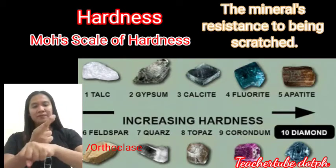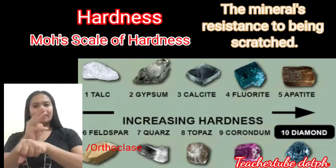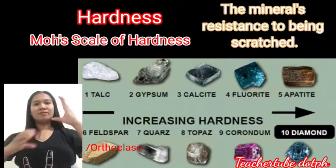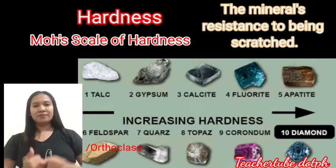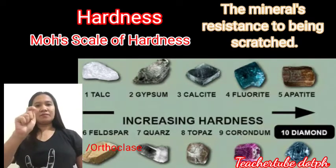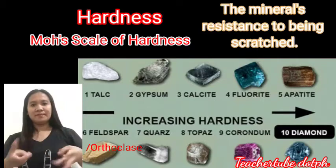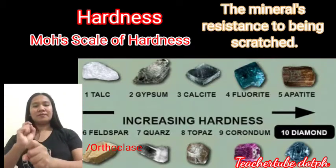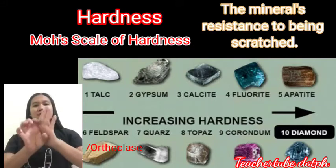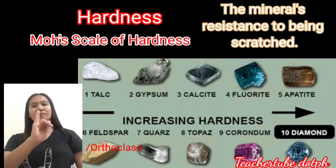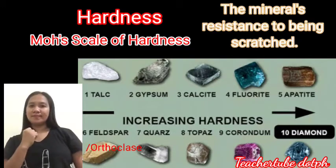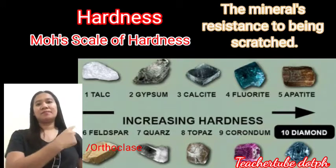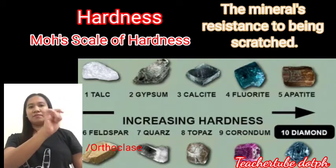The harder minerals are difficult to scratch; the softer ones are less resistant. Friedrich Mohs, a German mineralogist, prepared a scale of hardness numbered 1 through 10 in increasing hardness. Here is the Mohs scale: 1 talc, 2 gypsum, 3 calcite, 4 fluorite, 5 apatite, 6 orthoclase.